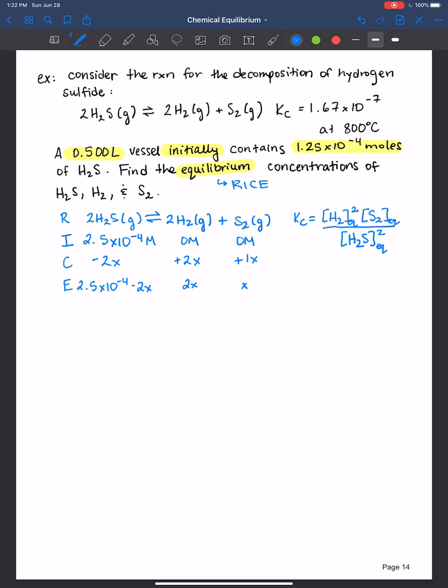In this case here, this will be 1.67 times 10 to the negative 7th is equal. If we're looking at hydrogen gas, that's 2x squared times x for the sulfur over 2.5 times 10 to the negative 4th minus 2x squared. This was the reactant, so I plugged that in here, raised it to that power, and these were the products. Be very, very careful.